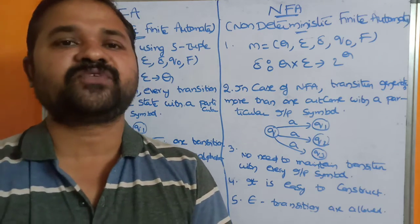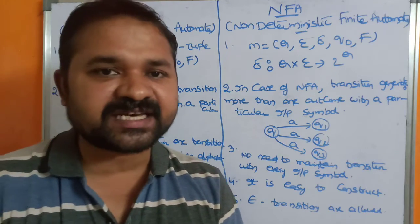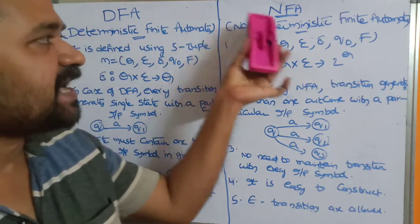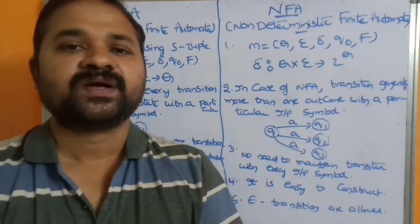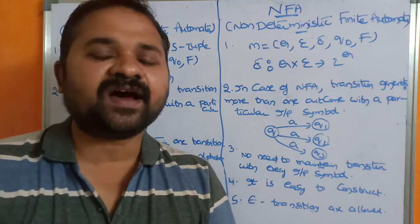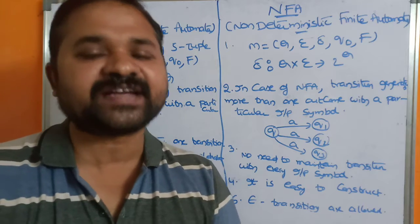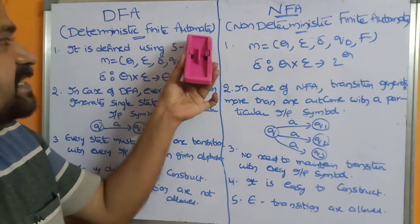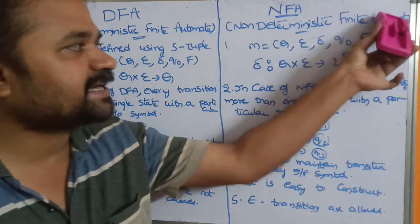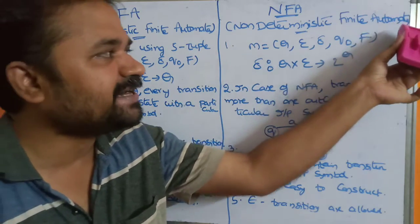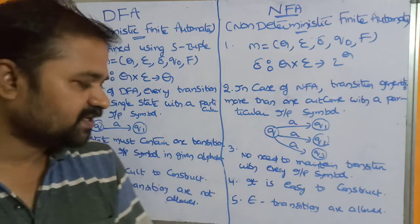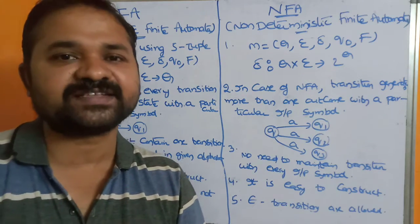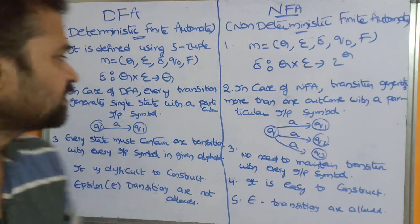In this video we are going to discuss the differences between DFA and NFA. Mainly there are two types of finite automata available: the first one is Deterministic Finite Automata and the second one is Non-Deterministic Finite Automata. We have five differences in total — let us see them one by one.